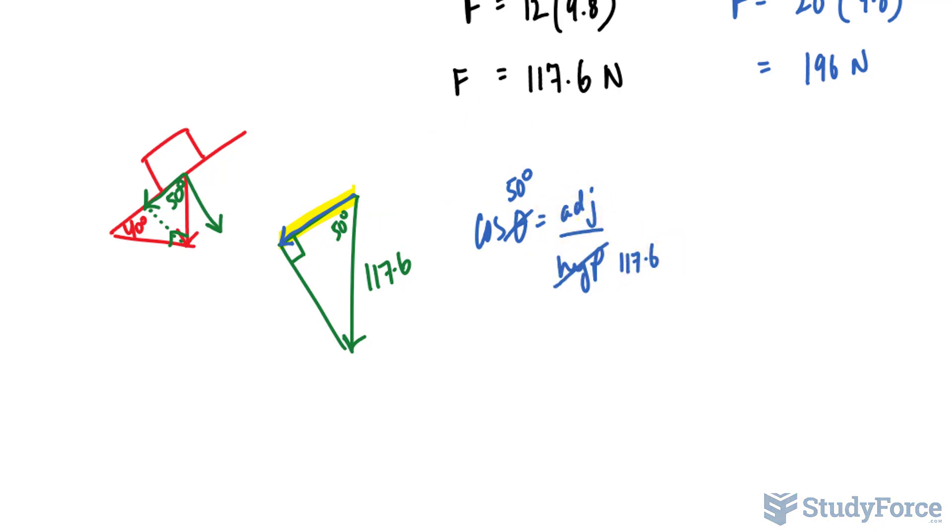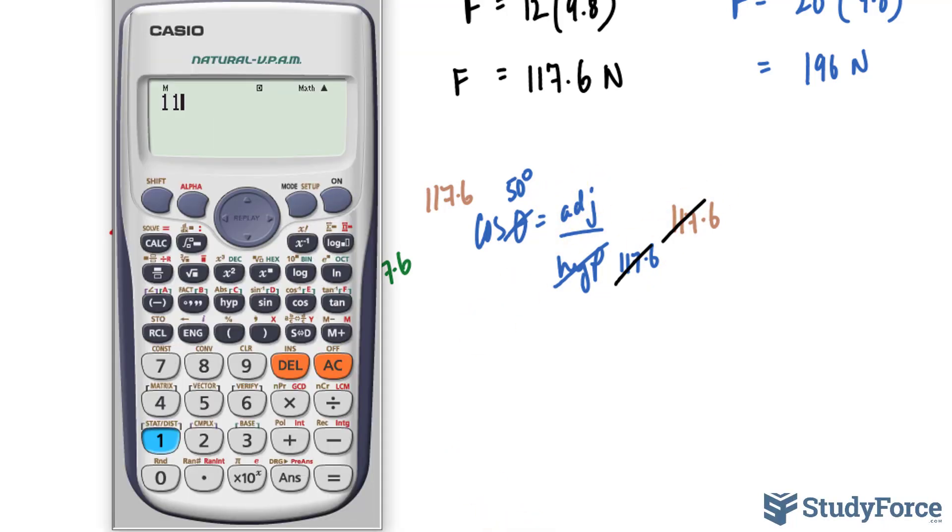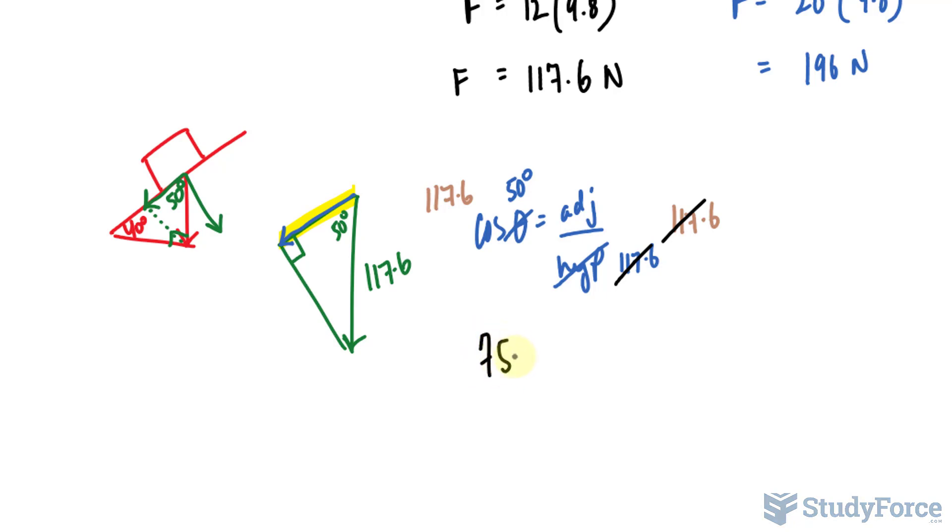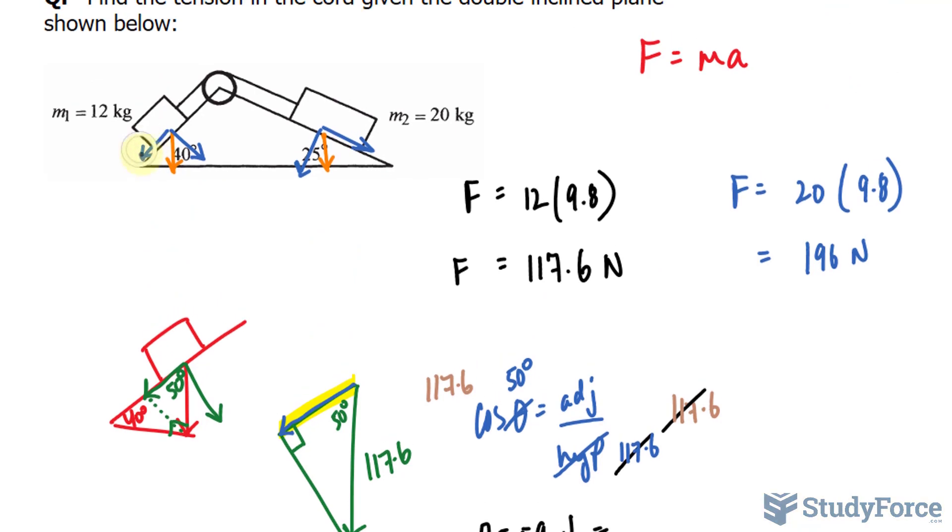All I have to do is multiply both sides by 117.6. And what this will do is cancel out these two numbers, giving me the adjacent value. So I have 117.6 times cosine of 50, and that gives me 75.59 newtons as the adjacent value, which represents the magnitude of that vector, 75.59.